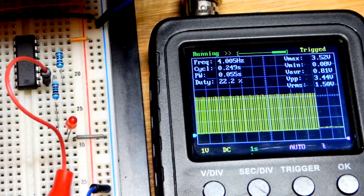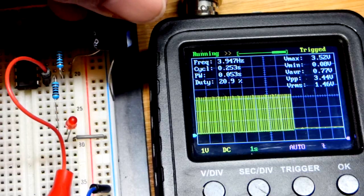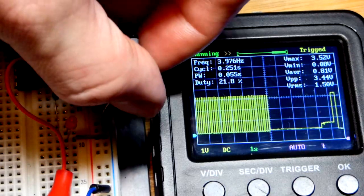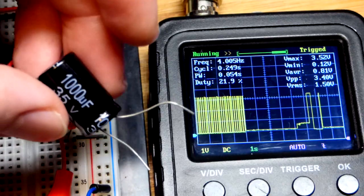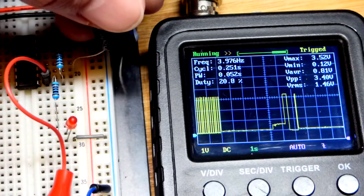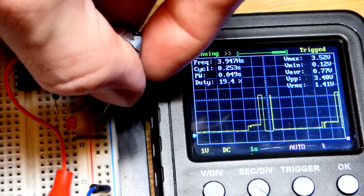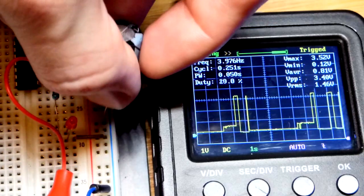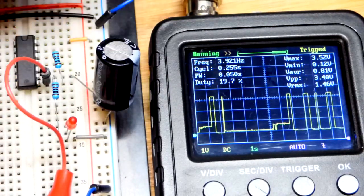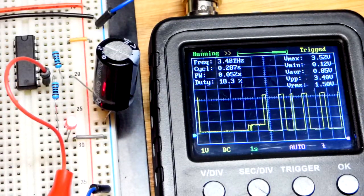And so, higher value capacitors will slow it down more than lower value capacitors, as you can see there. So, in any case, we'll go back to this capacitor, because this capacitor and the one kilo ohm resistor, this is a 1000 microfarad capacitor. The other one was a 100 microfarad capacitor. So, the other one had one tenth the capacitance. It was probably flashing about ten times as fast.